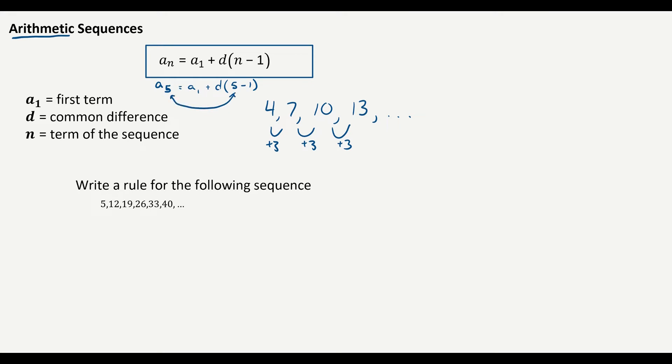So a sub one is the first term, d is what we call the common difference, what you add or subtract between each number. And n is the number, the term of the sequence, not the value of it, but which position are you at. And we're not going to go into deriving this formula, we're just going to accept it at face value.